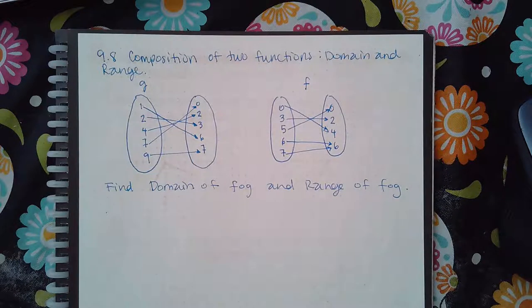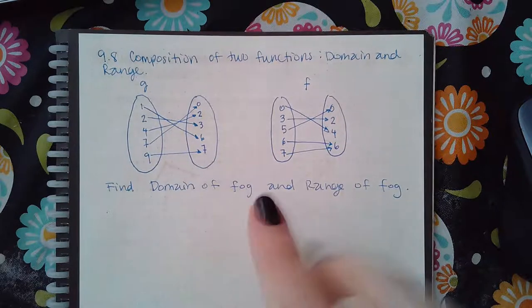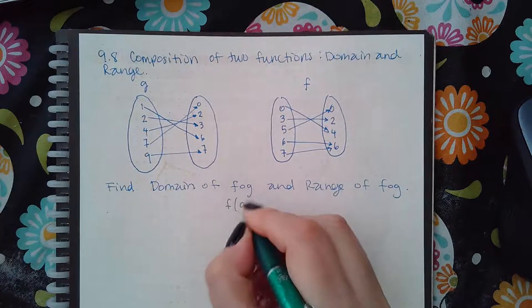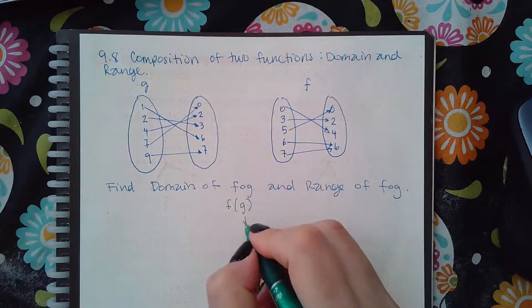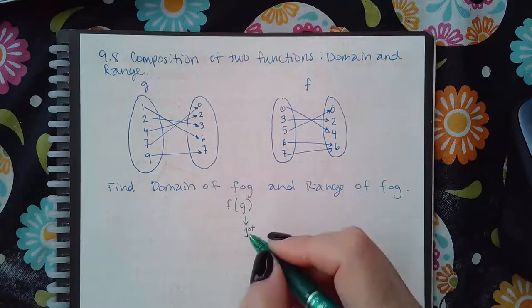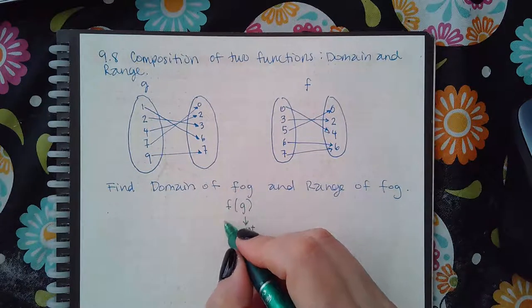Okay, here we have the composition of two functions in a picture graph and they want us to give them the domain and range of f of g. So f of g means that g is the inside, which means I need to evaluate this one first and then once I do that I can do this one second.